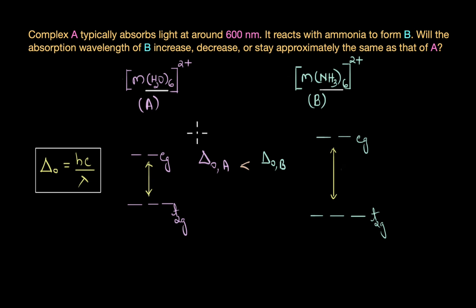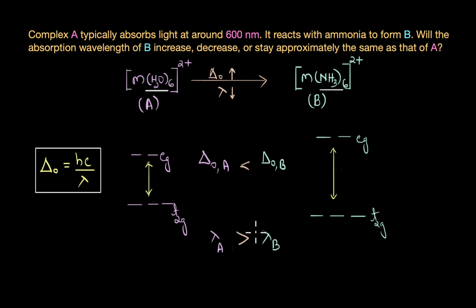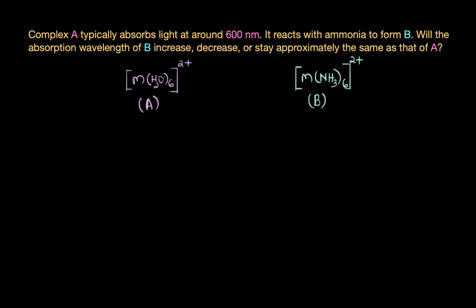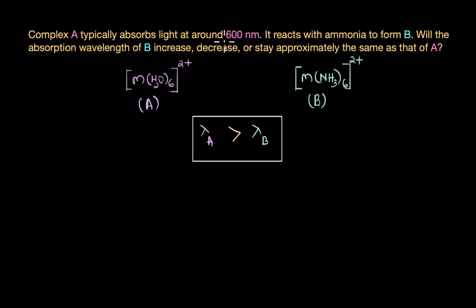When complex A becomes complex B by reacting with ammonia, delta naught is actually increasing. Since delta naught is inversely proportional to the absorption wavelength, with a larger delta naught the absorption wavelength of B would be smaller than the absorption wavelength of A. So we would expect complex B, M(NH₃)₆²⁺, to absorb at a shorter wavelength than 600 nanometers — lambda B would be less than 600 nanometers.